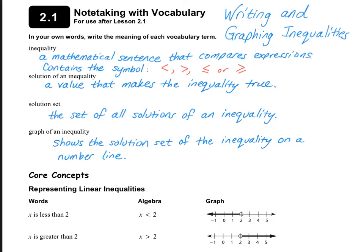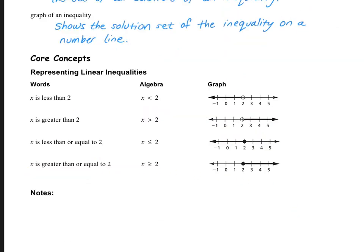Let's look at examples in the core concepts. If x is less than 2, notice that we use the less than symbol and it's an open circle heading down from 2. This means the solution set does not include the number 2. x is greater than 2 looks like this — it has a greater than symbol, also an open circle, and it's everything above 2. Once again, 2 is not included in the solution set.